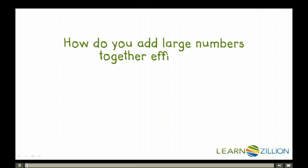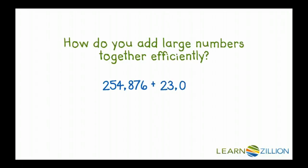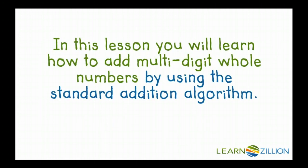How do you add large numbers together efficiently? When I'm adding 254,876 plus 23,087, should I use partial sums? Should I use a number line? In this lesson you will learn how to add multi-digit whole numbers by using the standard addition algorithm.